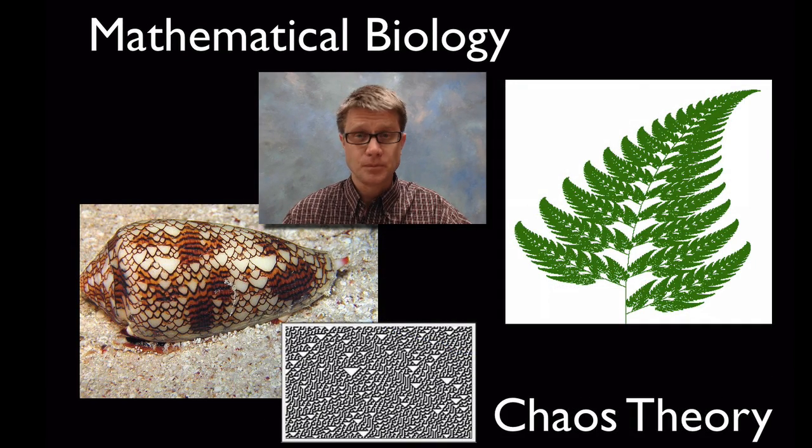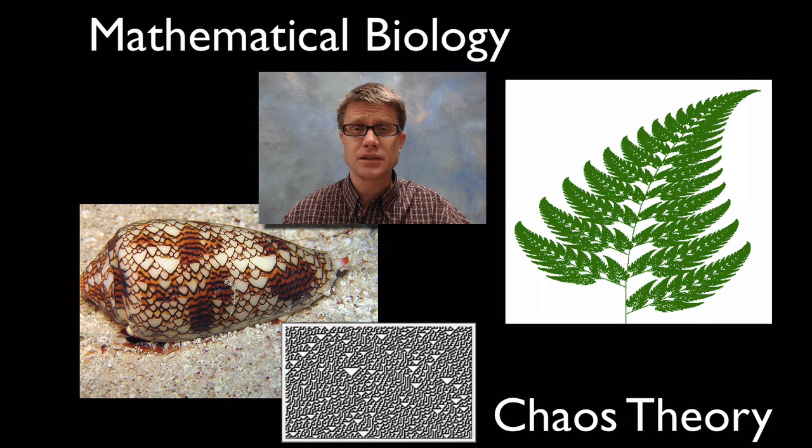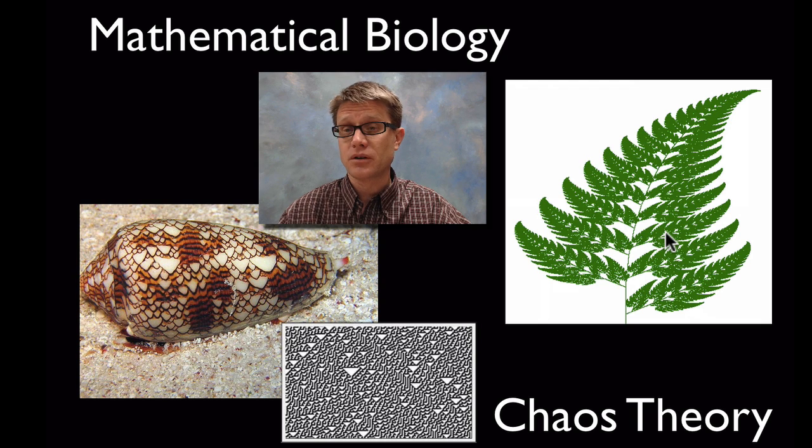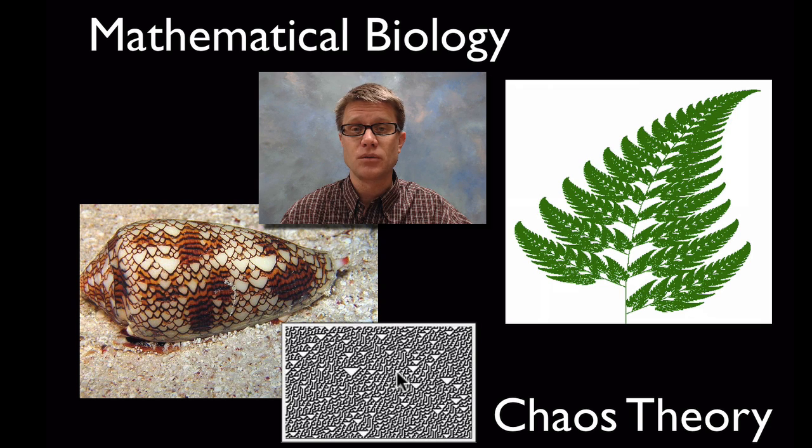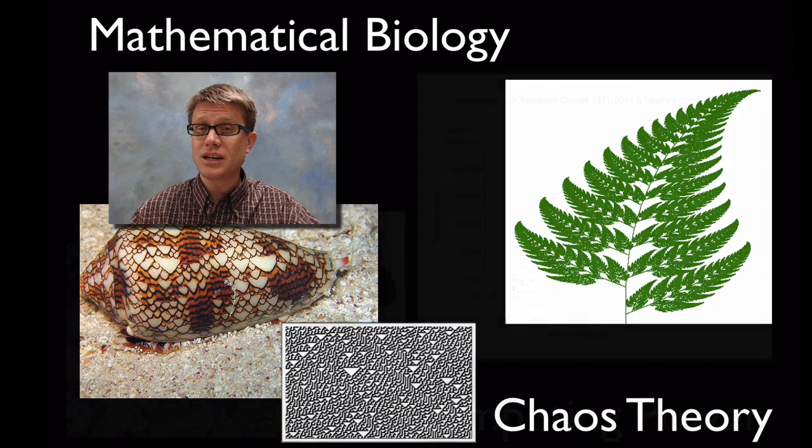We also had the creation of what's called chaos theory. We're using mathematics and computers to predict life. This is a computer simulation of what a fern may be. This is a simple mathematical pattern called the Rule of 30 that was created by Stephen Wolfram. It can predict even the patterns on this cone snail. Mathematics can predict life.